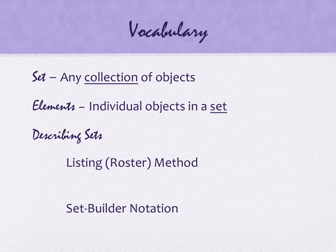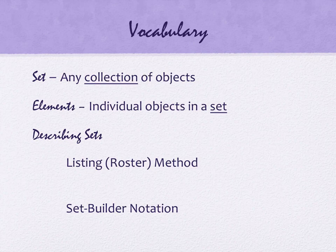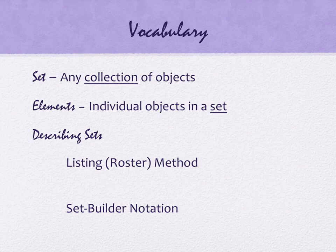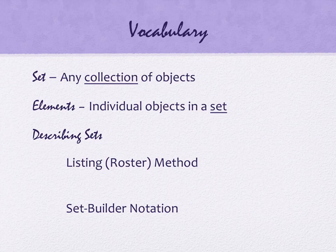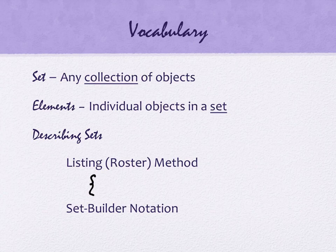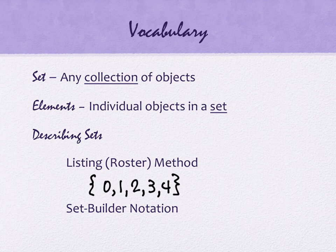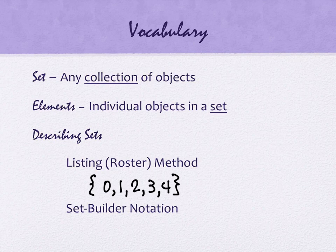The second option is called set builder notation. Set builder notation is used primarily when things have that longer listing format, but are mathematical in nature. So I'm going to give you an example, a number example for both of these. So if we had a listing or a roster method, we might list the numbers 0, 1, 2, 3, 4. It's the numbers 0 through 4, whole numbers. And there's nothing wrong with that, it's a short list, it's compact, it's simple. It works.